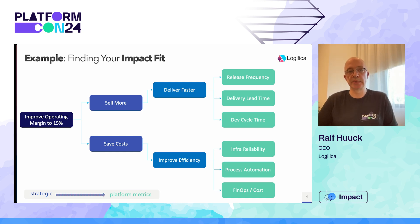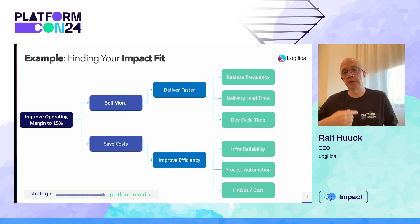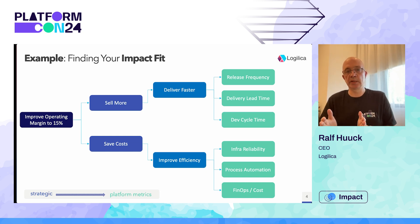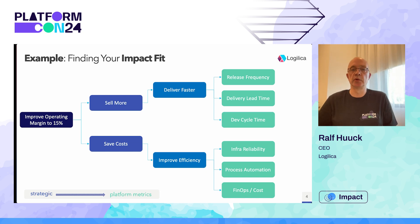If you want to improve your operating margin, you either have to sell more or save costs. On the sell-more side, you might contribute by delivering faster — improving your release frequency, shortening your delivery lead time, or working on your dev cycle time with fewer interruptions. That can improve your speed, help the organization ship features more quickly, react more agilely to market demands, and ultimately sell more. If that's an important line in your organization, you can get buy-in by structuring this path from business goal to platform engineering activity.